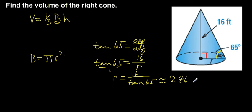So, now I know that my radius is 7.46 feet, so I can plug into my π times 7.46 feet squared in order to have my area of my base.